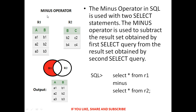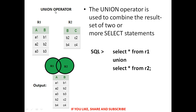Then the minus operation: R1 MINUS R2 gives the output. The minus operator in SQL is used with two SELECT statements. It subtracts the result set obtained by the first SELECT query from the result set obtained by the second SELECT query. The SQL query is: SELECT * FROM R1 MINUS SELECT * FROM R2.